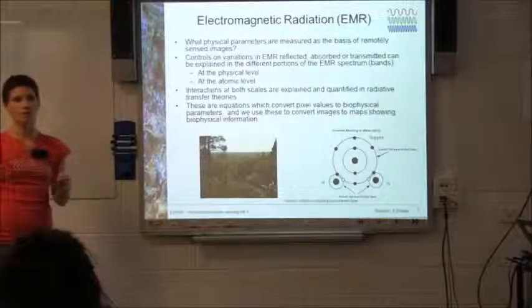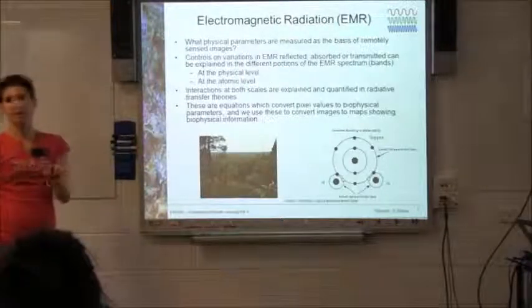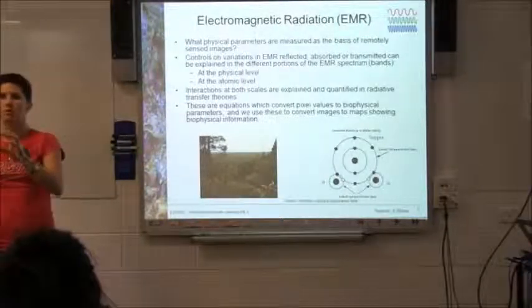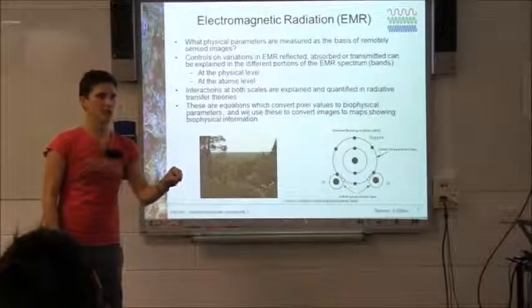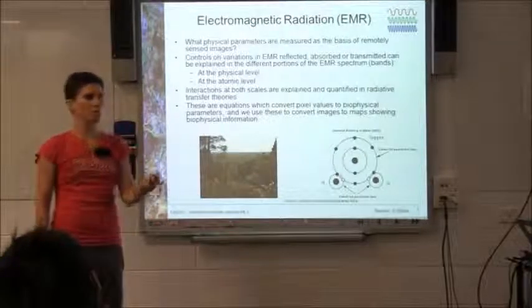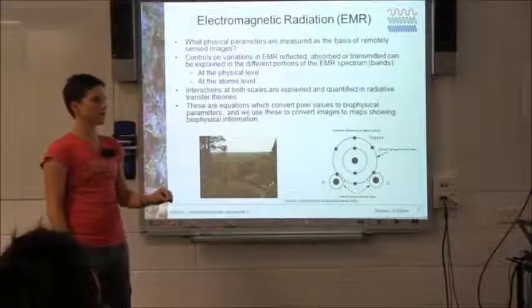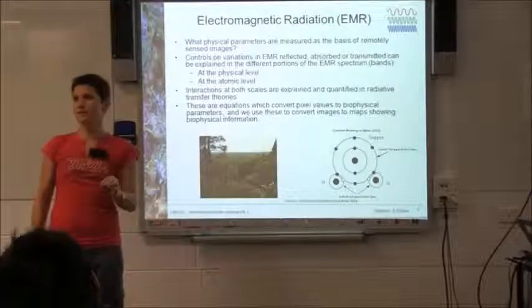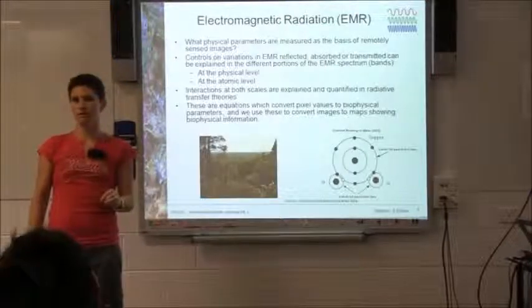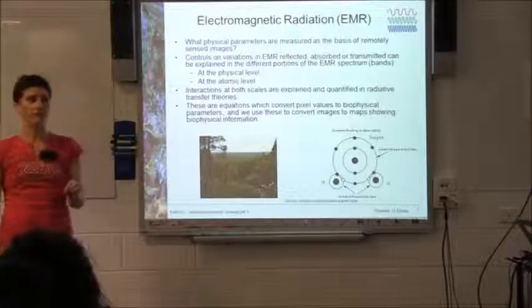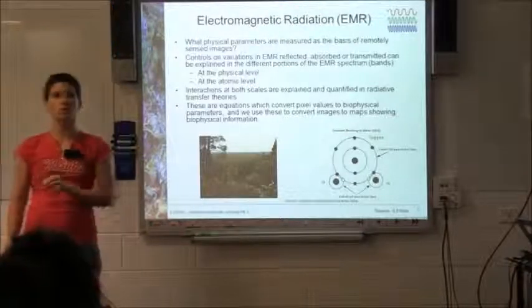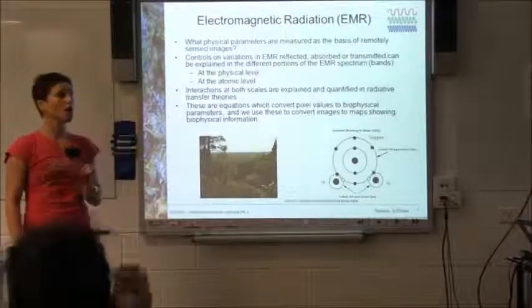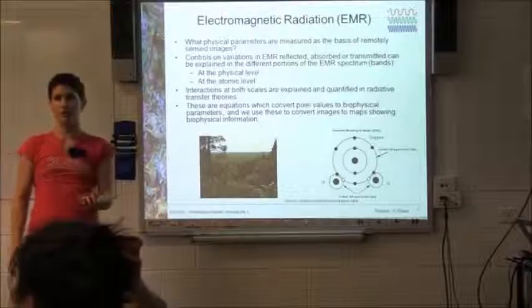What we want to be able to do is understand what's happening with light when it interacts with a feature. Is it reflecting, absorbing, or being transmitted through? And what are the reasons for that? And what wavelengths are affected? Because all features reflect, absorb, and transmit light of different wavelengths in different ways.